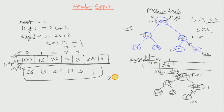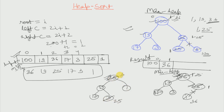Now the max heap structure looks like: 25, 19, 17, 3 and 1. If we max heapify again, what will be done is we pick out the root element, meaning we replace it with the last element. The last element is 3, so 3 will come to the root. We unlink 25 and store it in our resultant array at the second index. Then from the root we will max heapify.